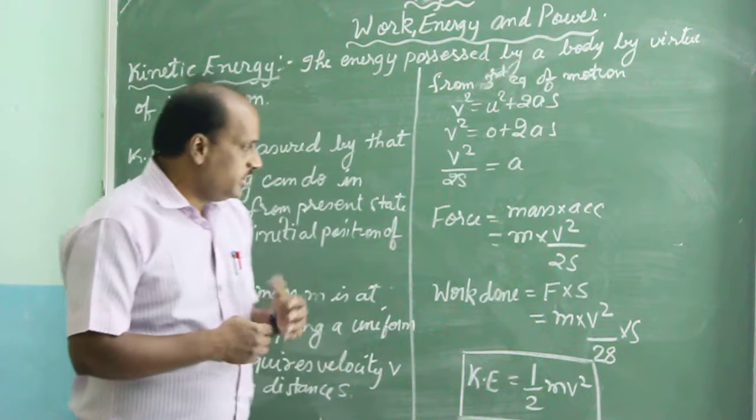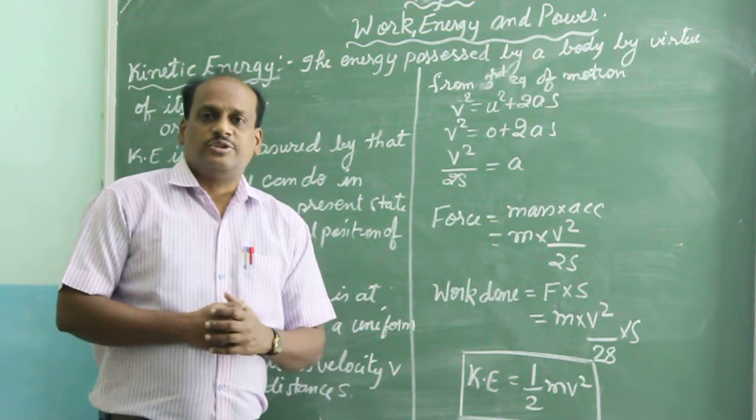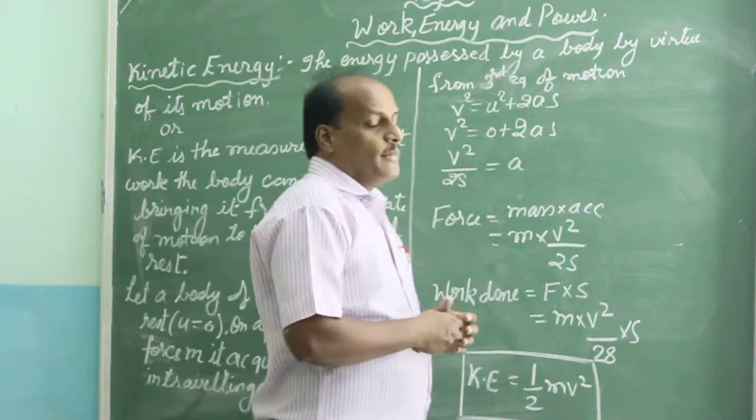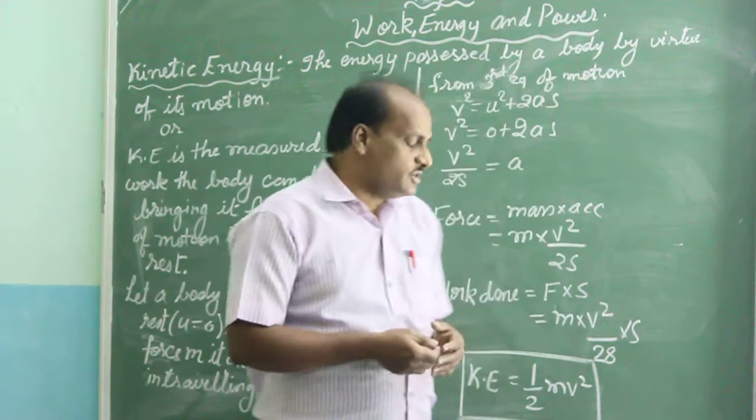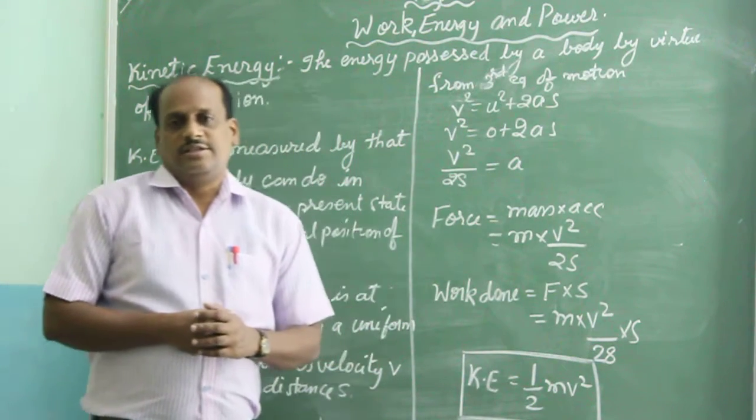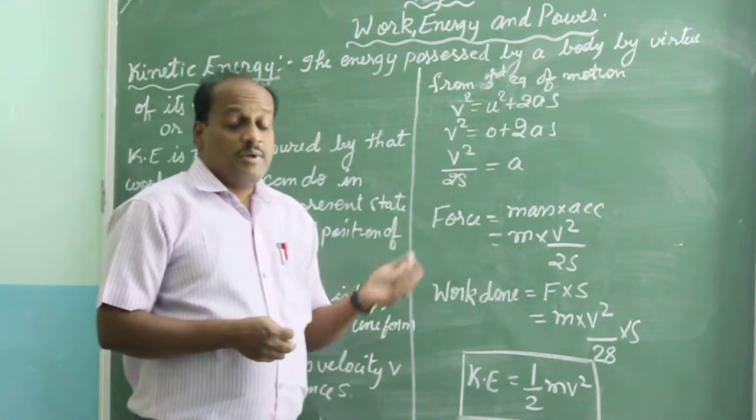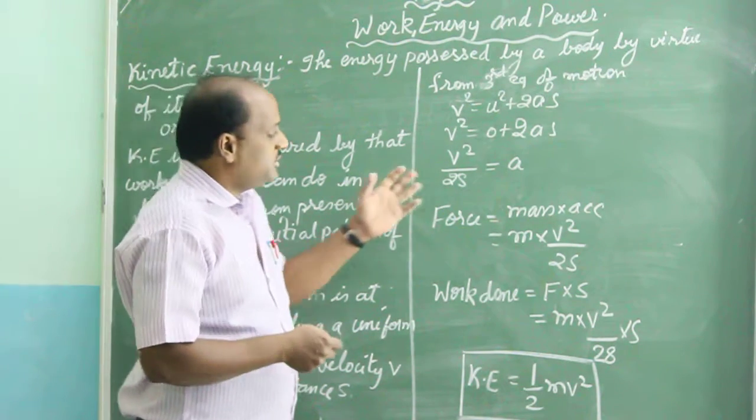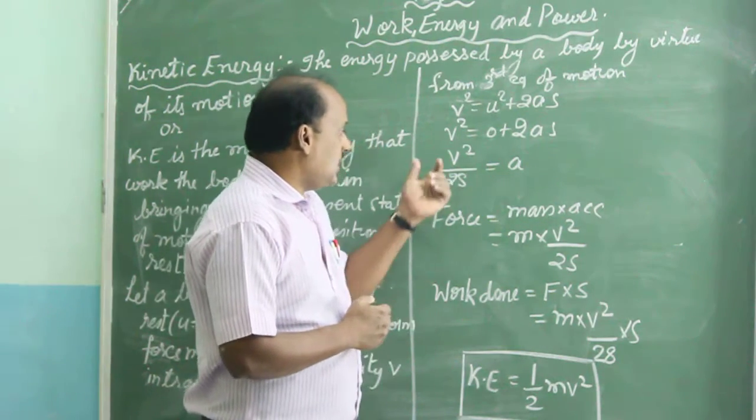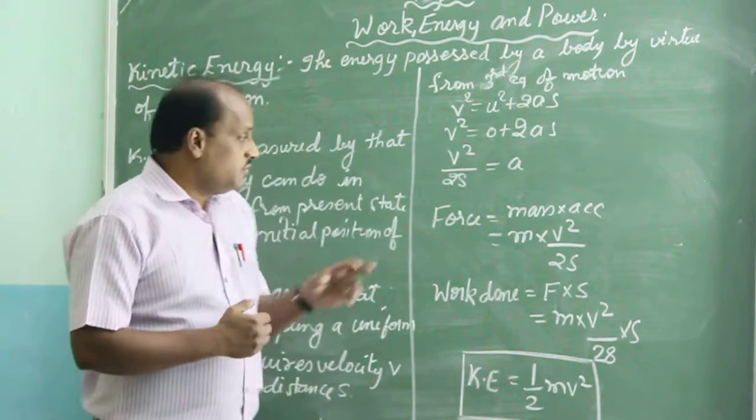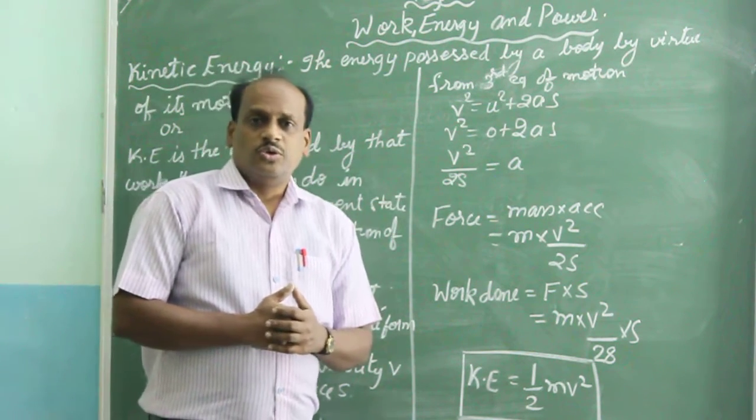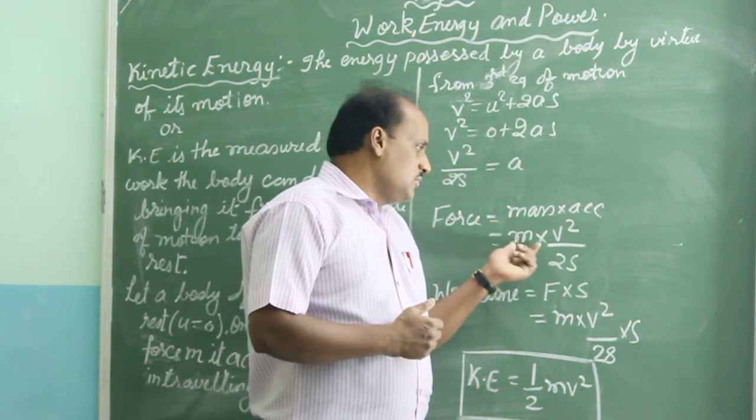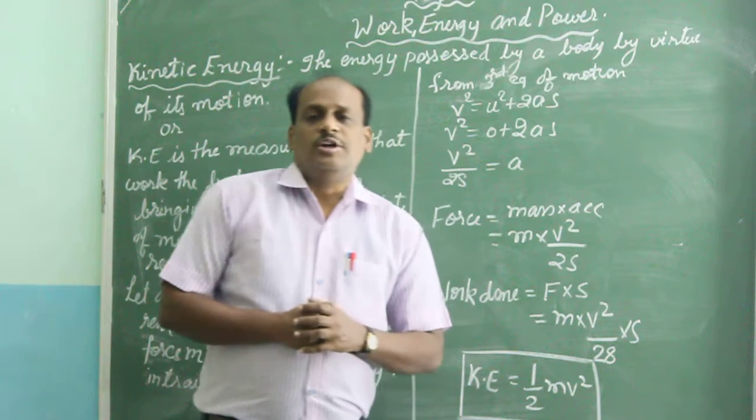Which is the acceleration produced in the body. Now we find the force. What is force? Force is equal to mass into acceleration. So mass of this body is m and what is acceleration? We have found out the value of acceleration is v² upon 2s. So force F will be equal to m into v² upon 2s.